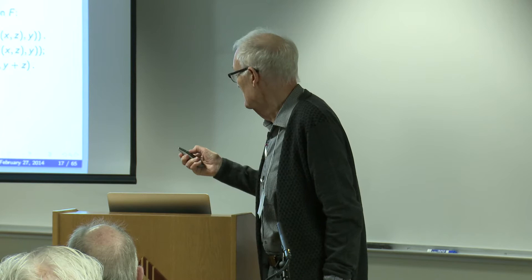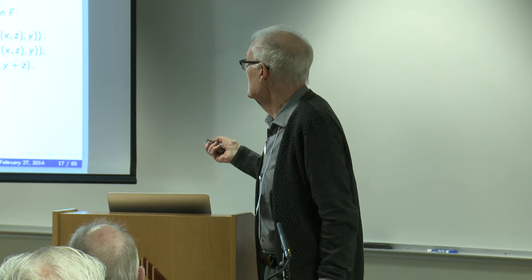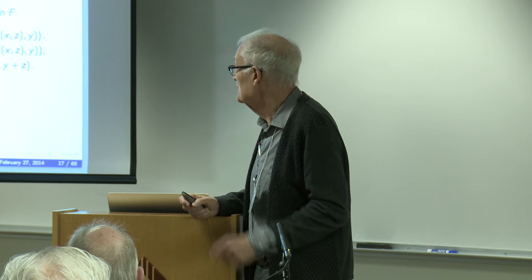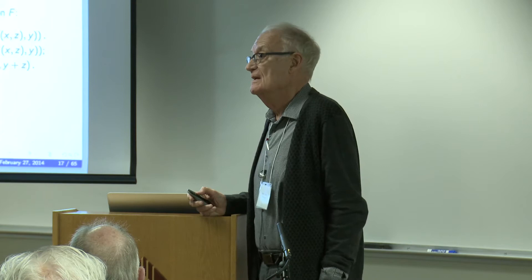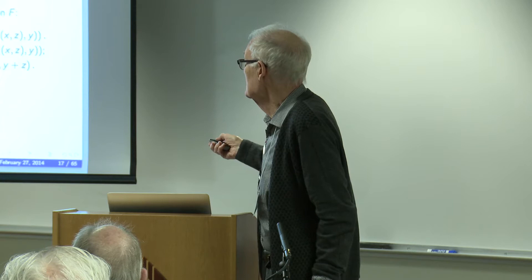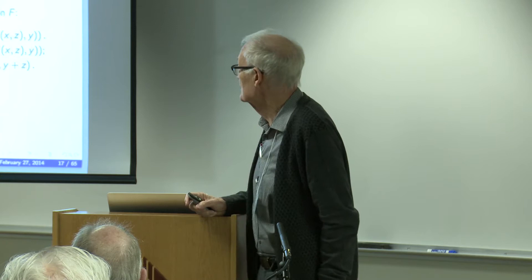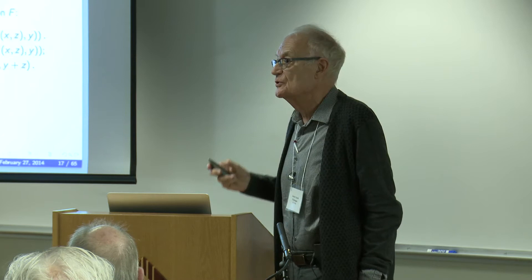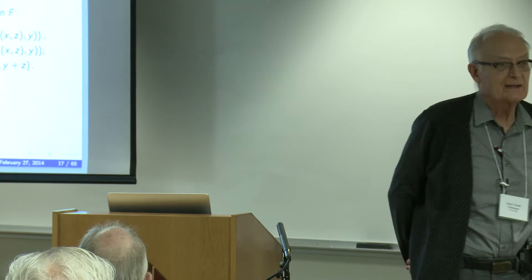There are other examples of abstract constraints. One is the permutability equation: F(F(x,y),z) = F(F(x,z),y) — you can permute the last two terms and nothing changes. The quasi-permutability equation is essentially the same thing except you use a subsidiary function g: F(g(x,y),z) = F(g(x,z),y). And F is translatable if iterating it is the same as adding the last two terms x and y. These are three examples of abstract constraints found in the functional equation literature.